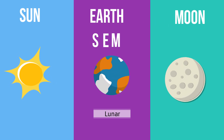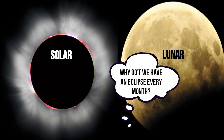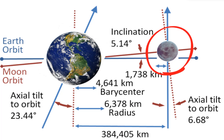You may be wondering why you don't see a solar and lunar eclipse every month. The reason is that the moon's orbit around the earth is tilted by about 5 degrees relative to the orbit of the earth around the sun.